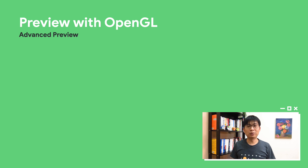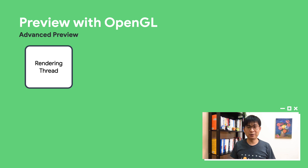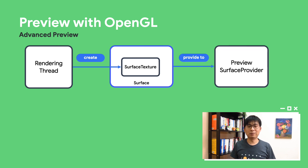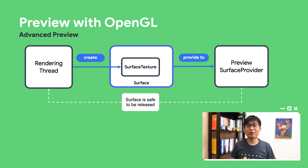PreviewView is easy and convenient, but why do you want to do more? Maybe you want to draw some advanced effects on top of camera output, or perhaps you would like to integrate the camera preview into your existing OpenGL, Vulkan, or game engine app. Let's see how we can do this through the Preview Surface Provider API. You create a surface texture in your rendering setup, then create a surface using the surface texture, and provide the surface to the Preview Surface Provider. The surface provider will signal your application when it is safe to release the surface, and your application can then receive camera frames in the surface texture.